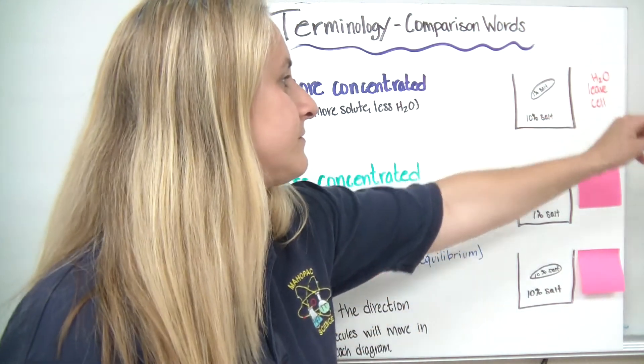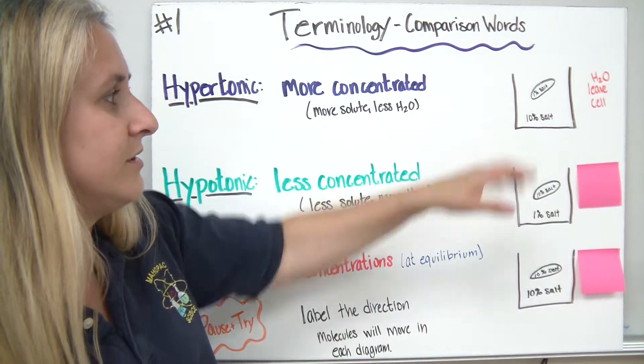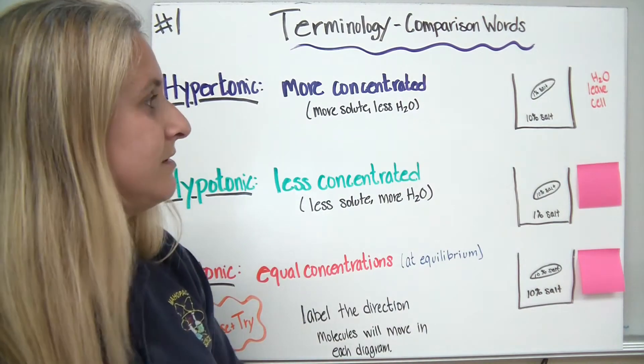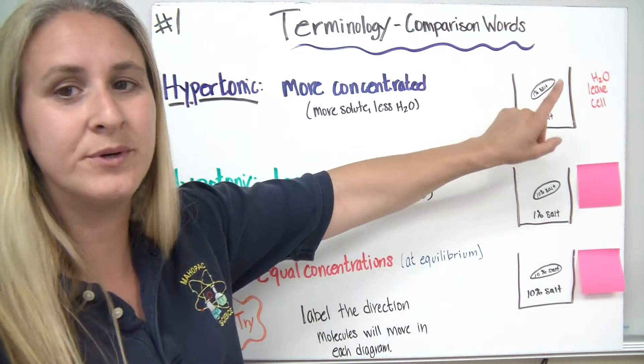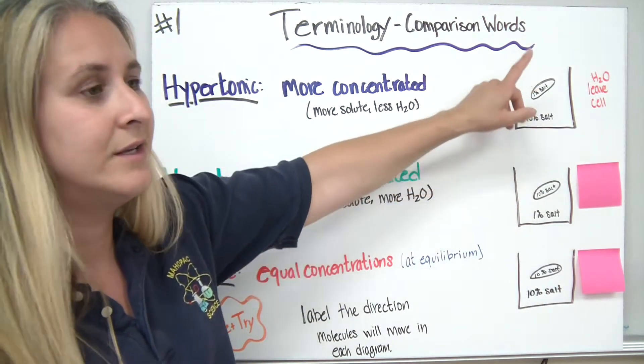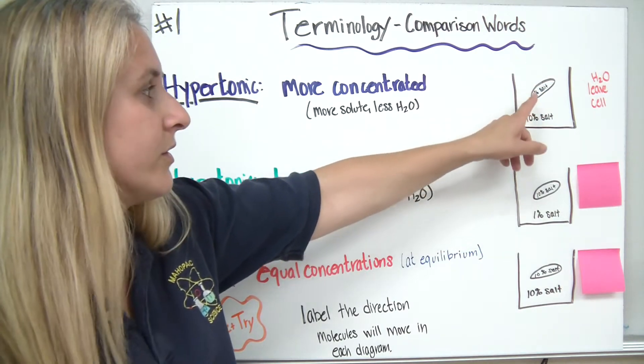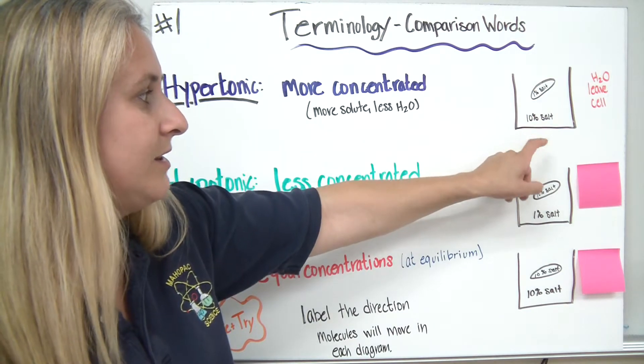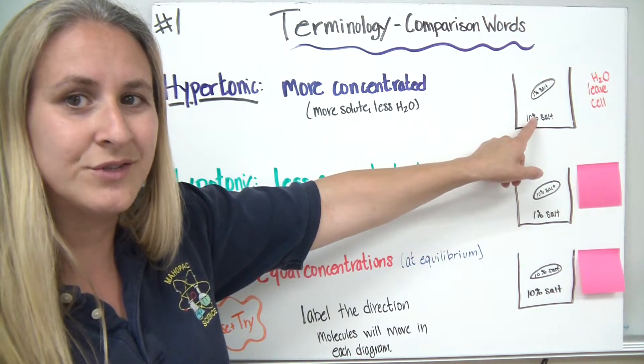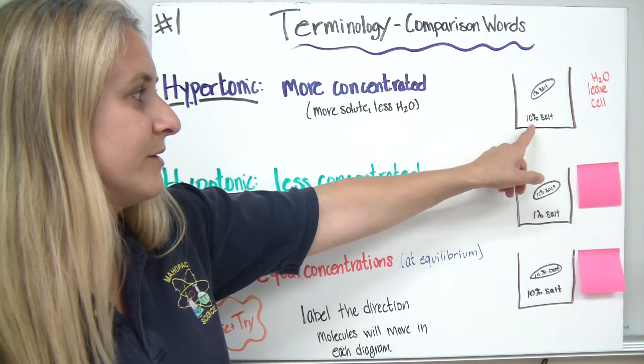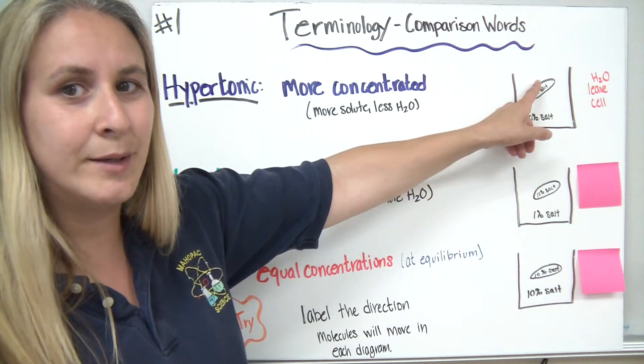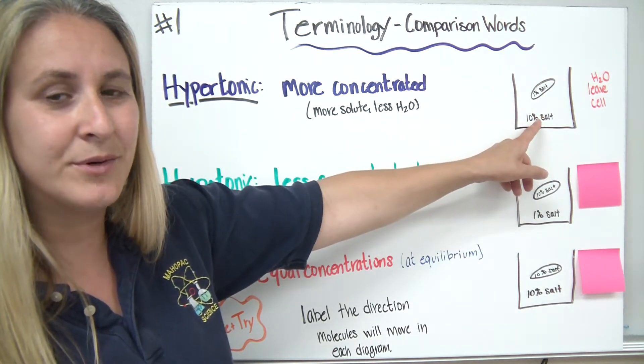All right, let's see how you did. In this situation, the water would leave the cell. Because if it's 1% salt inside, the rest of the solution would be 99% water. So it's 99% water inside the cell. If it's a 10% salt solution, there would be 90% water. So we would have 99% water in, 90% out.